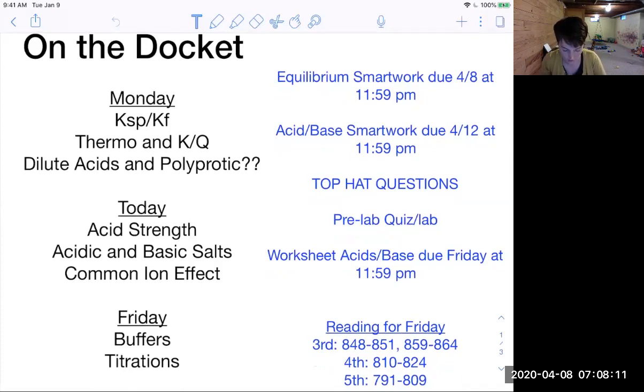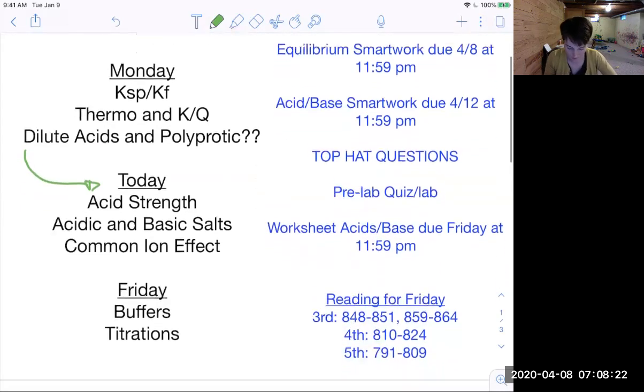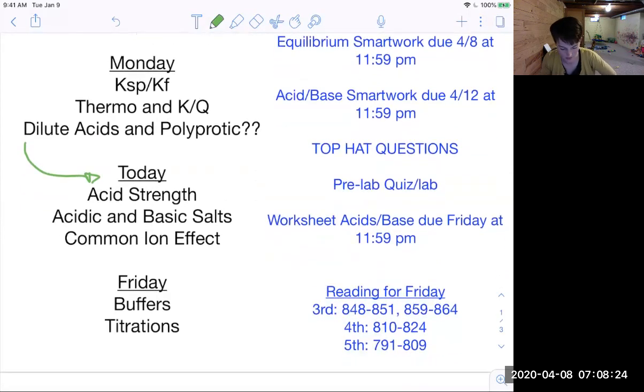So Monday, what did we go through? We went through KSP and KF, and we went through thermo K and Q. We did not get to dilute acids and polyprotic acids. So we're going to go ahead and move those down to today. We're also going to cover acid strength. So looking at the structure and then predicting the strength of the acid, as well as acidic and basic salts, and end with a common ion effect. Friday is going to be entirely reserved for buffers and titrations.